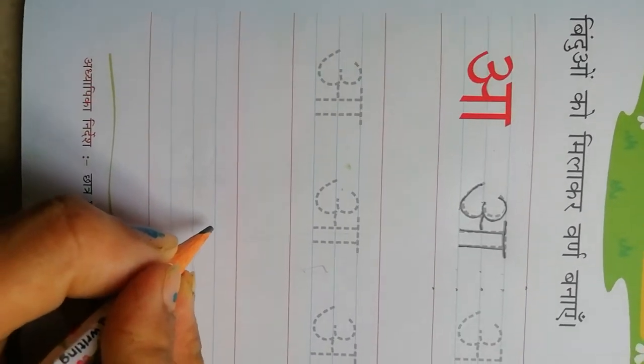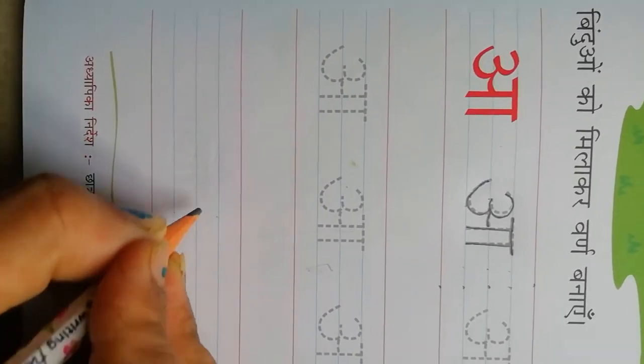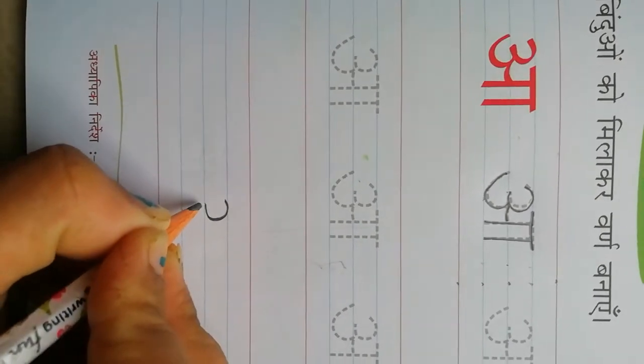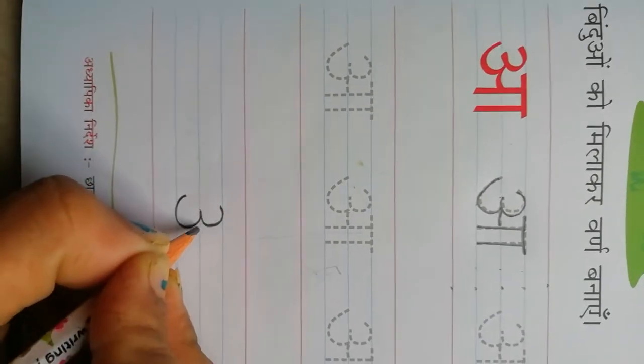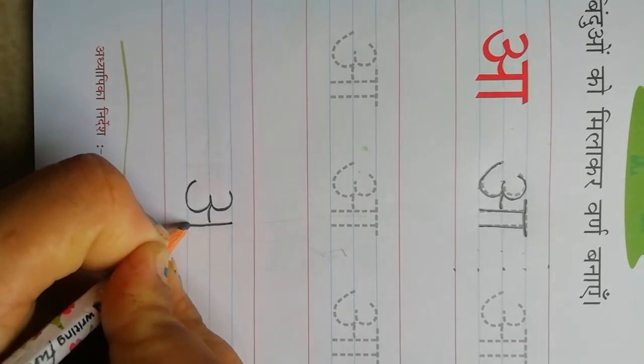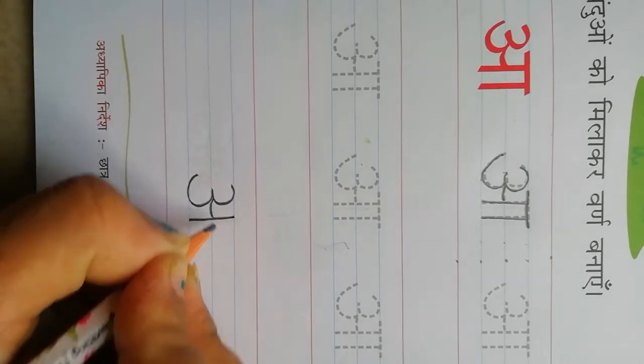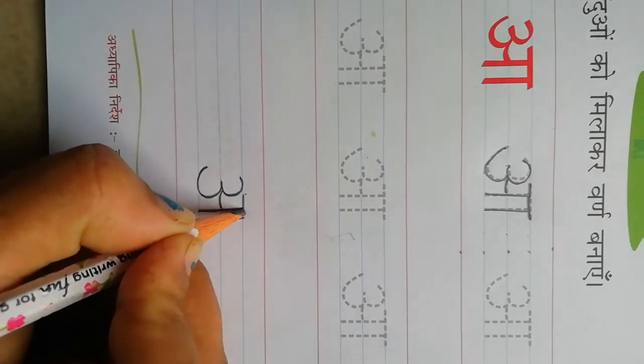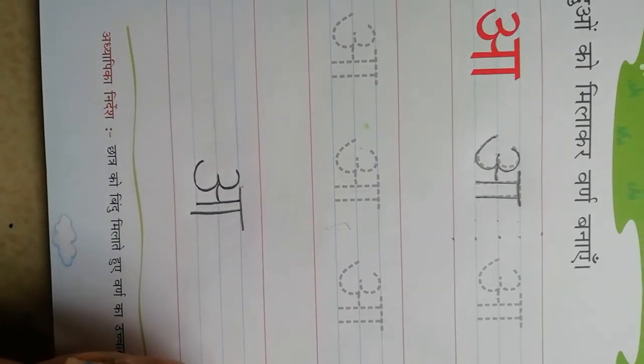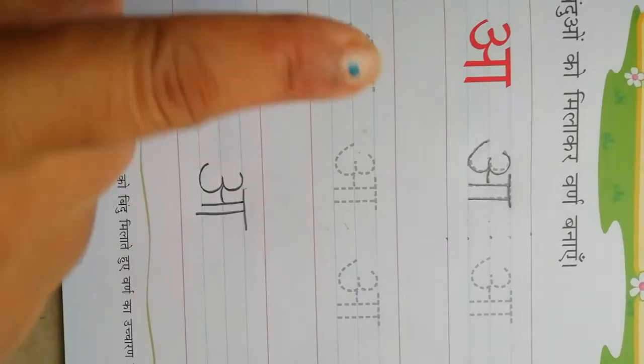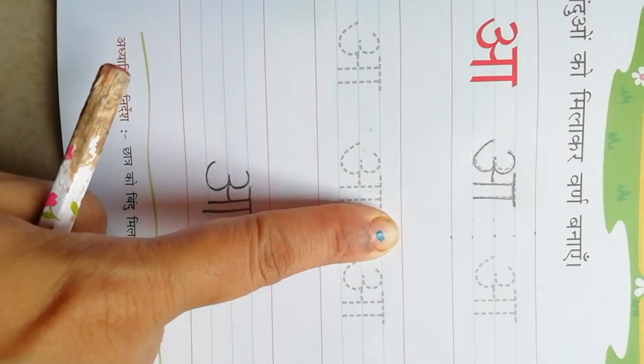Now how to write. You have to write between three lines. Left open curve, left open curve. Again, left open curve. Then, small curve. Standing line. Again, standing line. Then, sleeping line. We make aah. You have to write like this. And maintain one finger gap.